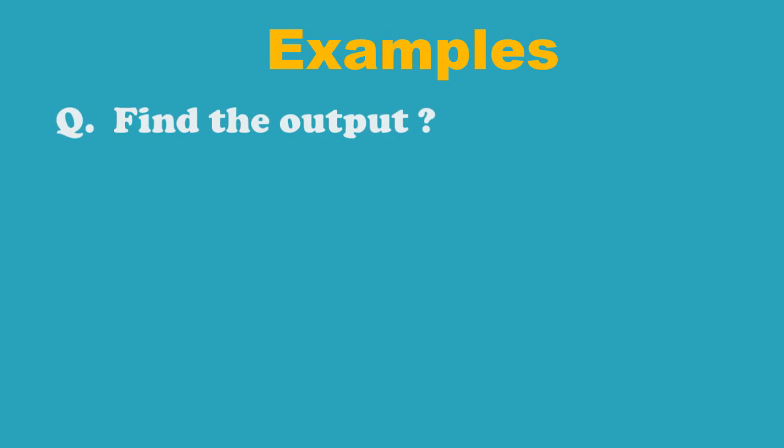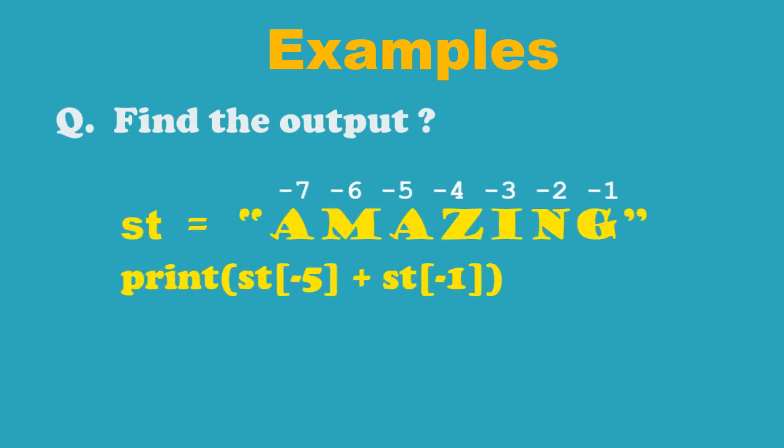Let's look at some example questions here. First is where you are asked to give the output. Here you will first mark the reverse index and see what is -5 and -1 position. Then you will add the 2 to give the output.